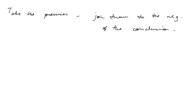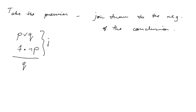How do we do that? Let's say, for example, we have something like P or Q, and we have T and not P, and our conclusion is Q. We're going to take these — these are our premises, here's our conclusion.